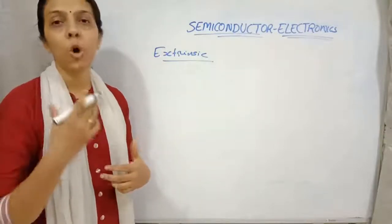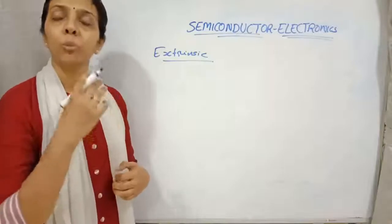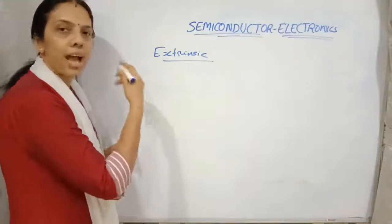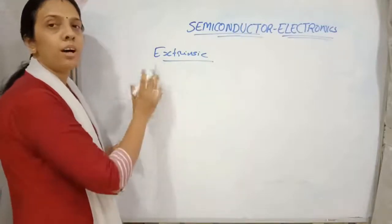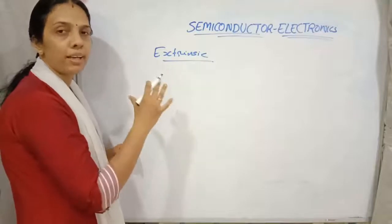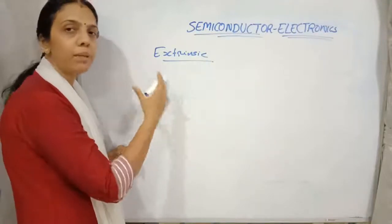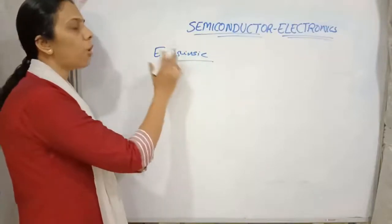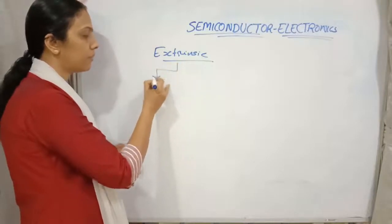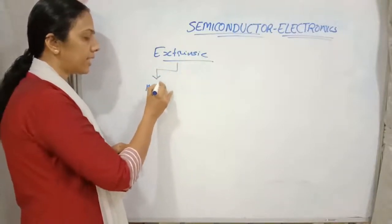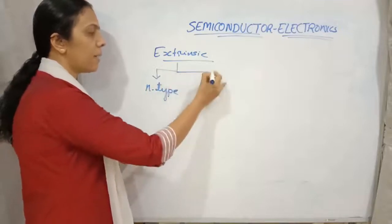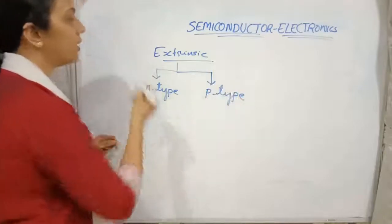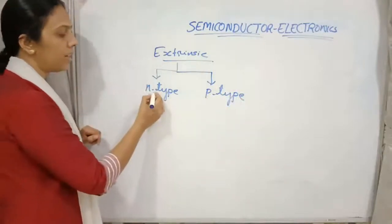In the case of extrinsic semiconductors, we add impurity to the pure semiconductor to get doped semiconductors. These doped semiconductors are of two types: one is n-type semiconductor and the other one is p-type semiconductor.